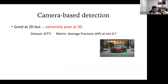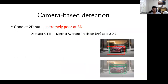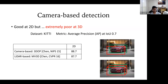The problem with just using images is that current networks are really good at 2D bounding box detection, but when you want to detect 3D boxes, they fail. The reason is you can't easily estimate depth from images alone, and without depth, it's very hard to put a 3D box on anything. Camera-based methods can be good for 2D, but for 3D they fail.